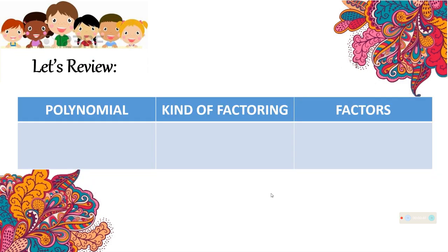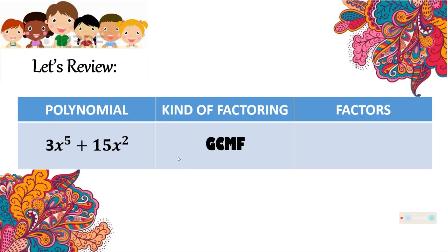Next, let us have 3x to the 5th power plus 15x squared. What kind of factoring technique are you going to use? That is under factoring polynomials with GCMF. And the factors of this are 3x squared times x cubed plus 5.